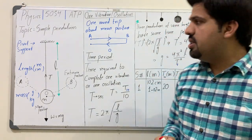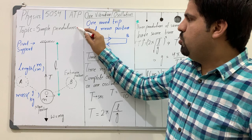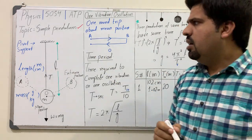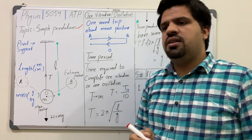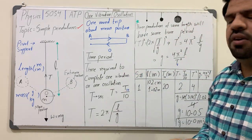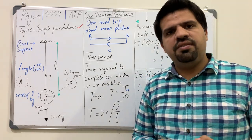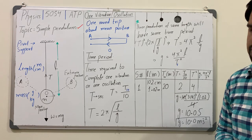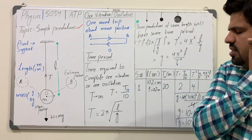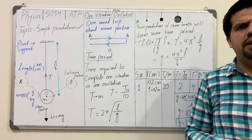That instrument is called the simple pendulum. First we will see its construction, then the formula related to it, and then how we can rearrange that formula to find acceleration due to gravity. It's a whole formula for investigation, and the examiner can ask this question in different ways, which I will discuss at the end.